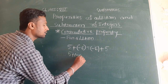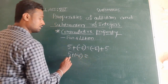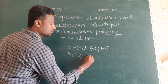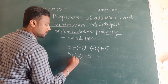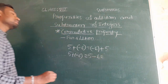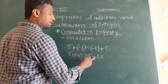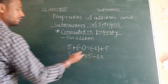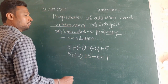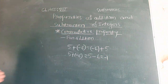So 5 plus (minus 6): plus into minus is minus, so 5 minus 6. The sign in front of the bigger value is minus, so 6 minus 5 equals 1, and therefore we get minus 1.